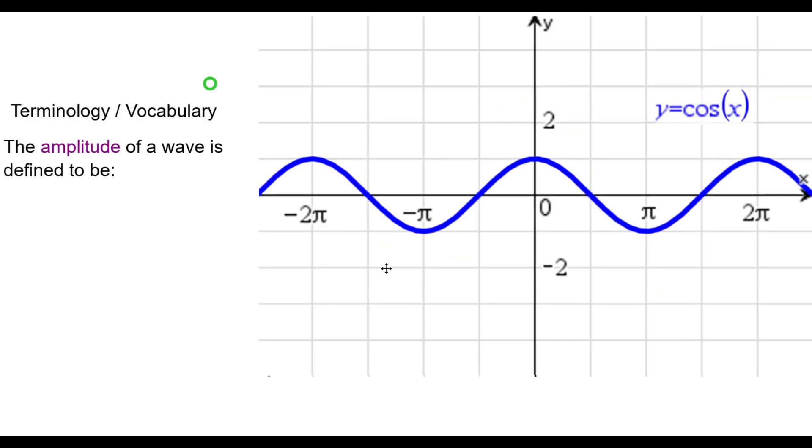Some terminology or vocabulary. The amplitude of a wave is defined to be this. It's the maximum minus the minimum all divided by 2.